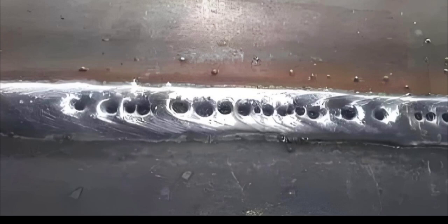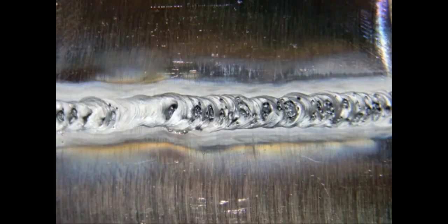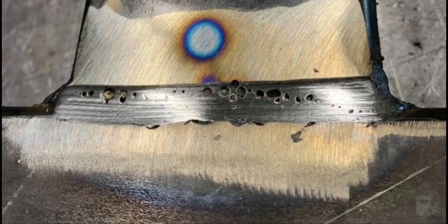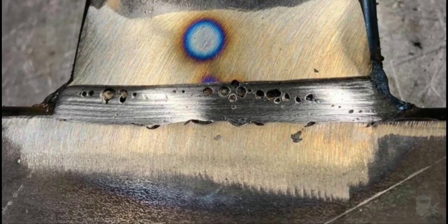Types of porosity include surface porosity (pores that break the surface of the weld), subsurface porosity (pores located beneath the weld surface, often requiring advanced inspection techniques to detect), and wormholing (elongated tubular pores that resemble wormholes, often caused by poor shielding gas or contamination).